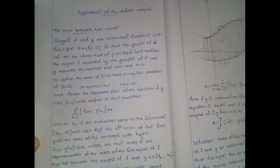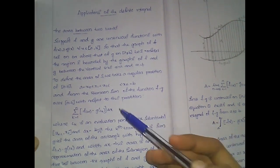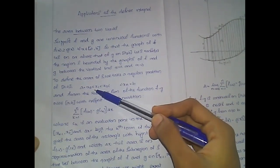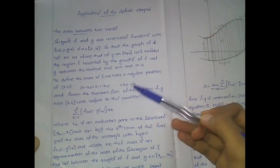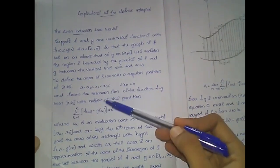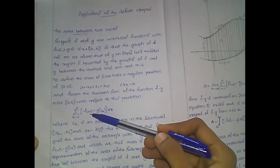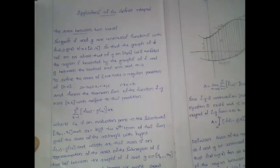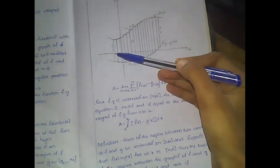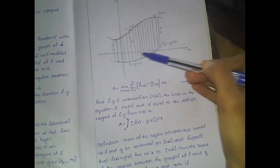This is the area between f and g, bounded by x equal to a and x equal to b. The region is enclosed between the curves f and g and the vertical lines x = a and x = b.